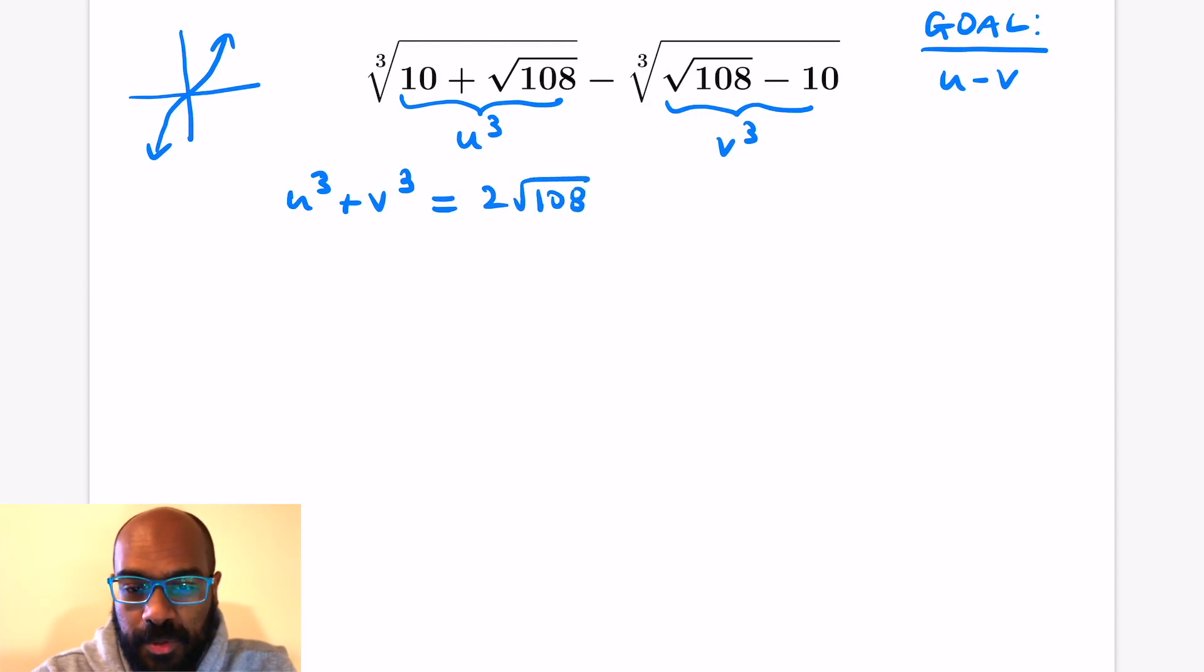Then maybe if we use the sum of u cubed and v cubed and the difference of u cubed and v cubed, we'll be able to figure something out. So u cubed minus v cubed then is 10 minus negative 10, which is 20.